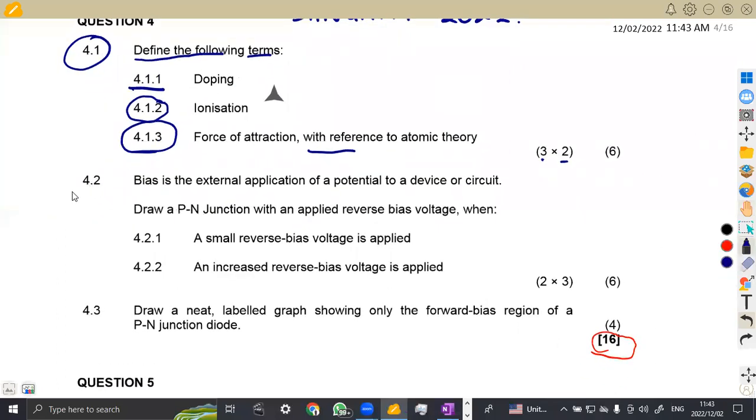On 4.2, we are now given bias. Bias is the external application of a potential to a device or a circuit. That is the definition. Draw a P-N junction with an applied reverse bias voltage. Take note, a reverse bias voltage whereby the negative is connected to the P-type and the positive is connected to the N-type.